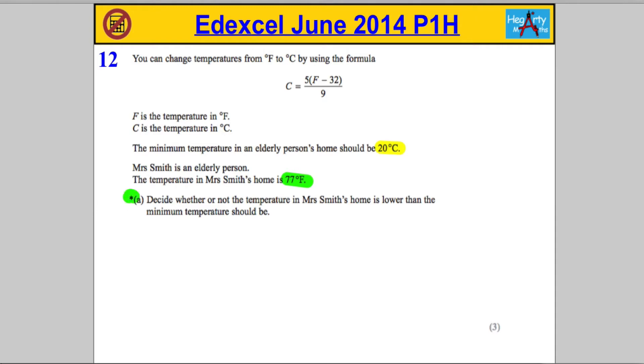We're asked, and notice the star here again, to decide whether or not the temperature in Mrs. Smith's home is lower than the minimum temperature it should be. Essentially what this question is asking you to do is substitute. We need to check what 77 degrees Fahrenheit is in Celsius. We're going to use the formula they gave us.